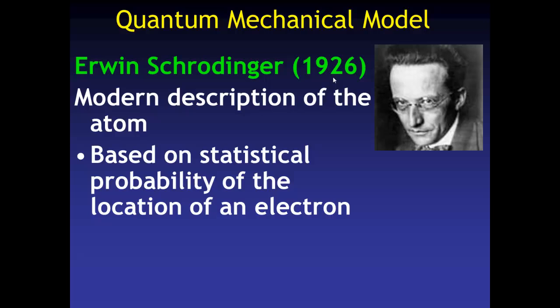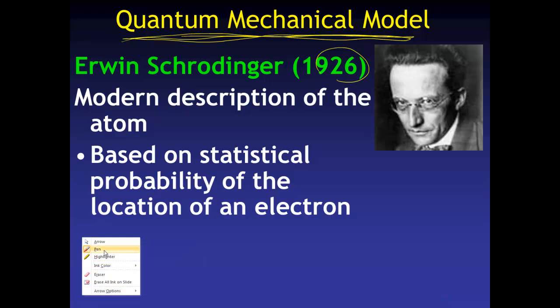Now in 1926, which was about 15 years after Bohr, Erwin Schrodinger came up with the modern description of the atom. And that is called the quantum mechanical model. You need to be familiar with this name. This is still considered to be the modern description of the atom. We haven't really come up with a better theory yet. And it is based on the probability of where you will find an electron.